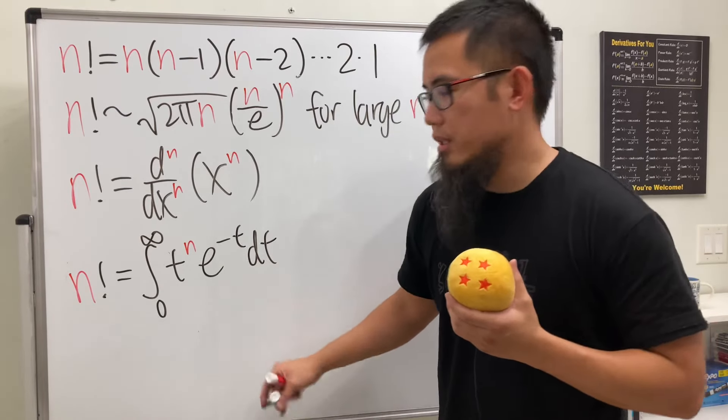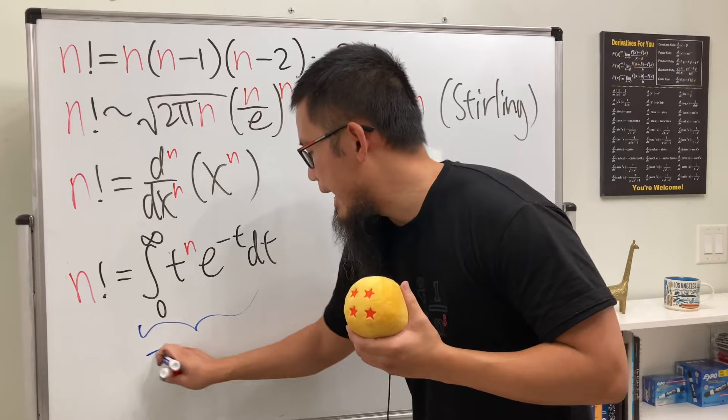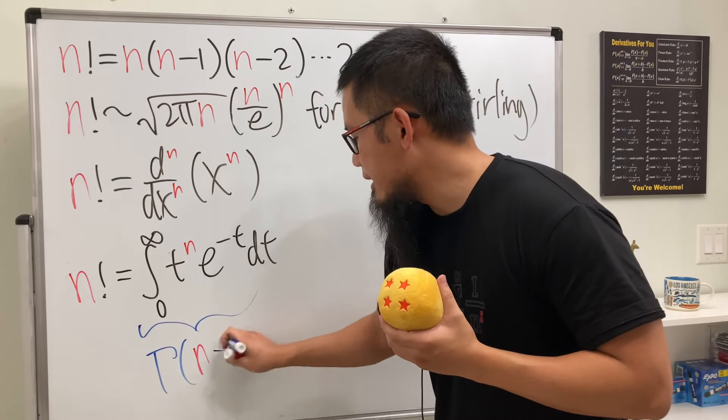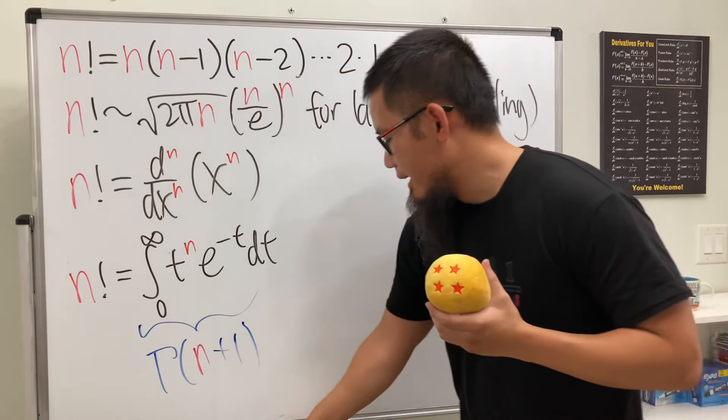And this right here is actually what we call the gamma function at n plus 1, and perhaps this is like the king of all.